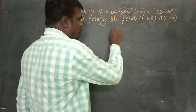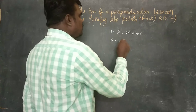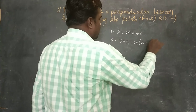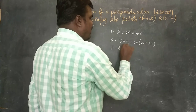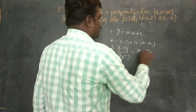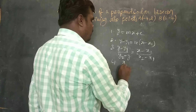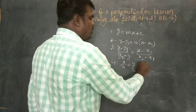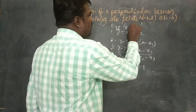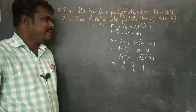The four formulas for equation of a straight line are: (1) y = mx + c, (2) y - y1 = m(x - x1), (3) (y - y1)/(y2 - y1) = (x - x1)/(x2 - x1), (4) x/a + y/b = 1. These are the four standard formulas.